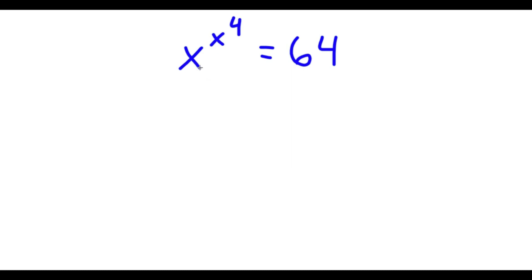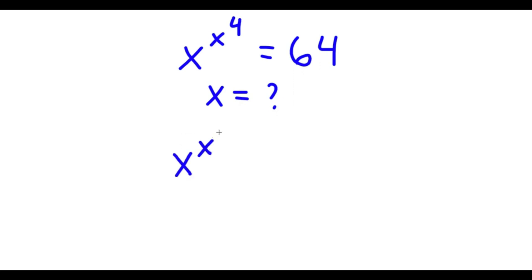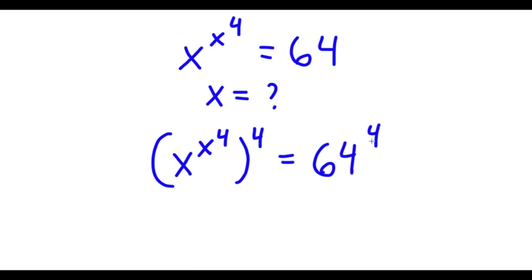In this problem, I have x to the power of x to the power of 4 is equal to 64. I need to find the value of x. For my solution, I'm going to first start by taking the power of 4 on both sides. So now I have x to the power of x to the power of 4, all to the power of 4, is equal to 64 to the power of 4.